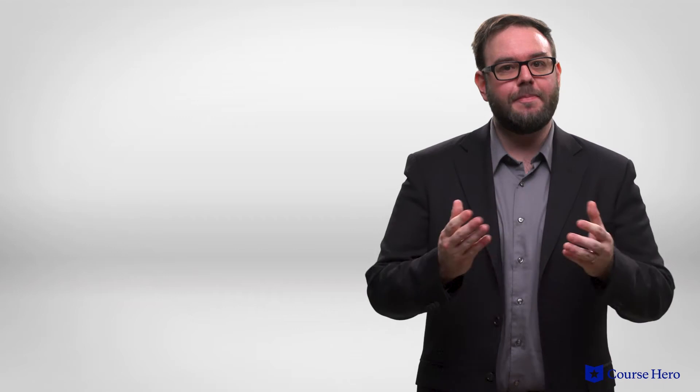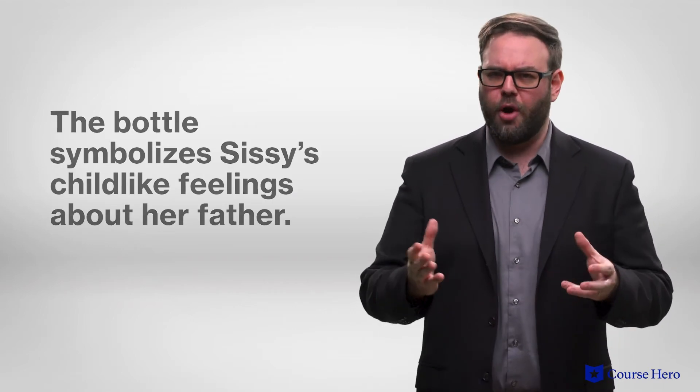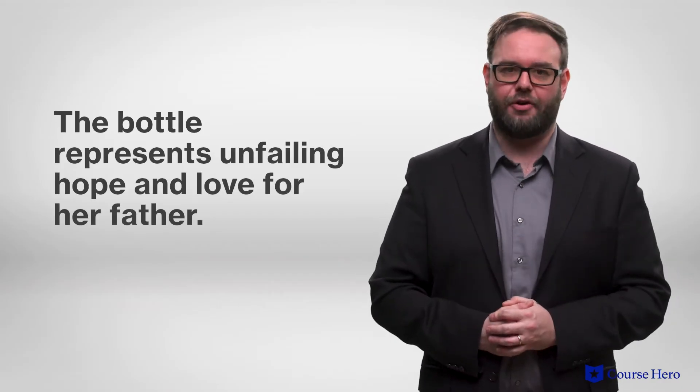One of the last things Mr. Jupe does before leaving is send Sissy to get him a bottle of nine oils, a remedy for the aches and pains he suffers from doing acrobatics during his performances. Sissy keeps the bottle. To Mr. Gradgrind, the bottle symbolizes Sissy's childlike feelings about her father. Her unwillingness to accept facts and accept her father is not coming back. For Sissy, however, the bottle represents unfailing hope and love for her father, sentimentality that provides her with emotional stability in the face of his abandonment.